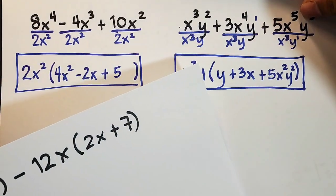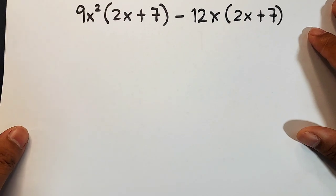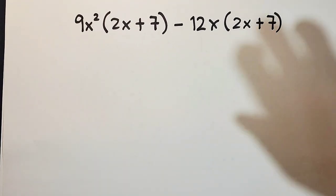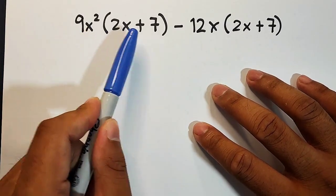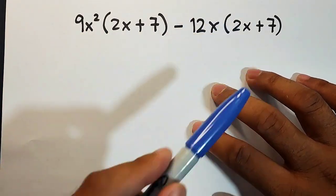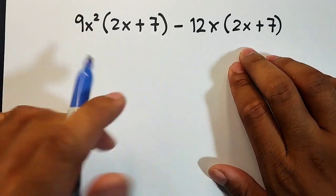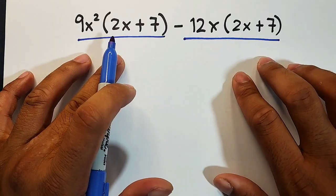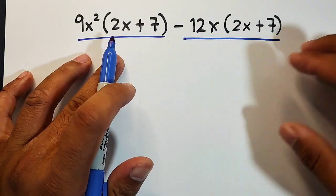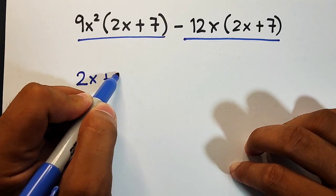In our next problem, we have 9x²(2x + 7) - 12x(2x + 7). As you can see, it's already factored, but not completely. This is one term, this is the second term. In each term, we have a common 2x + 7. So we can factor that out. Take out the 2x + 7.